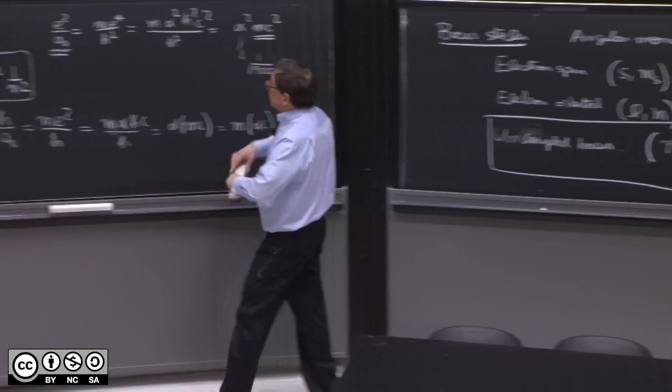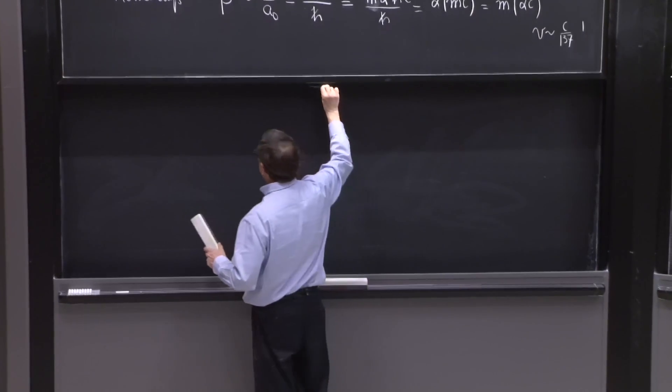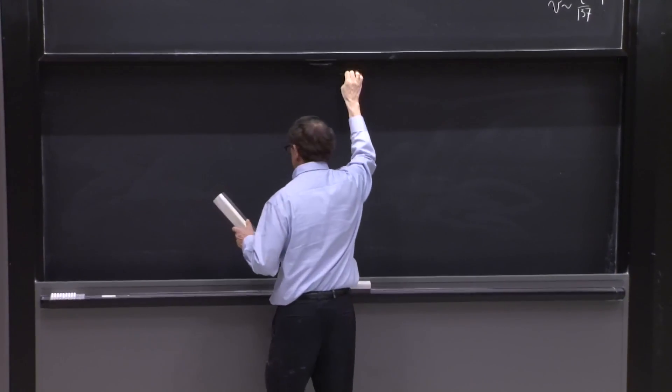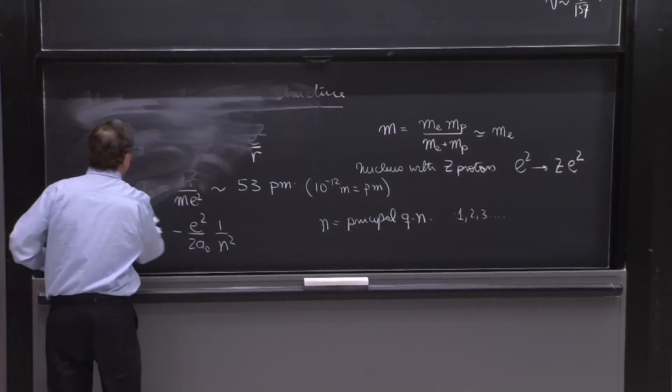All right. So our next thing will be getting into the electron spin. And I want to discuss two things, a little bit of the Dirac equation and the Pauli equation for the electron.